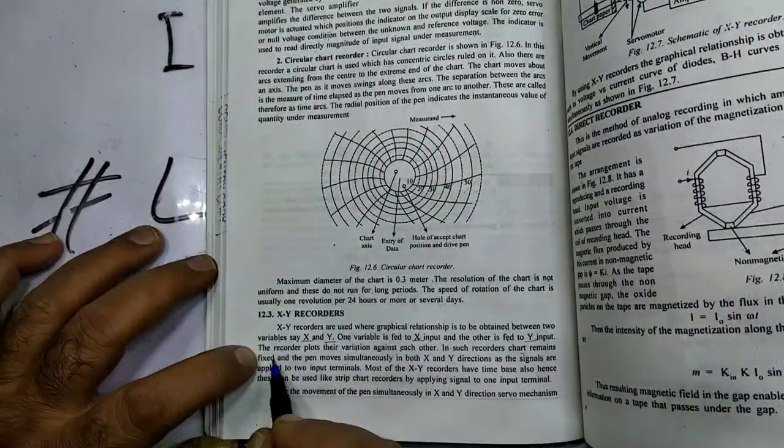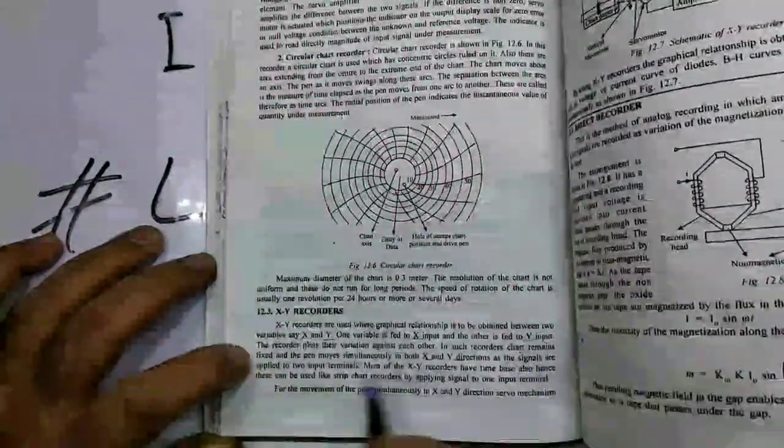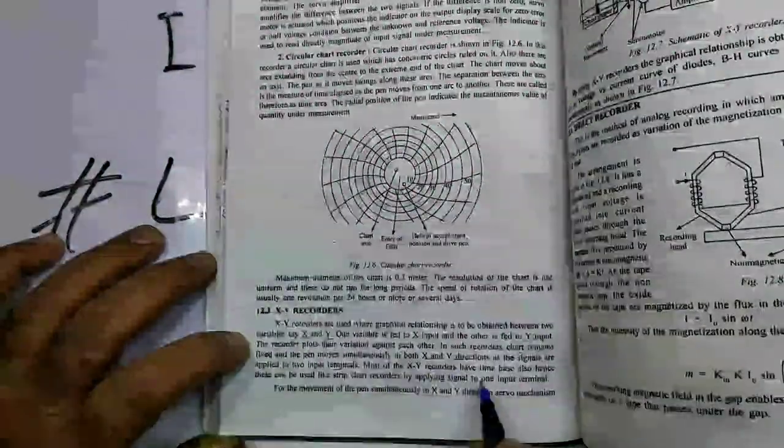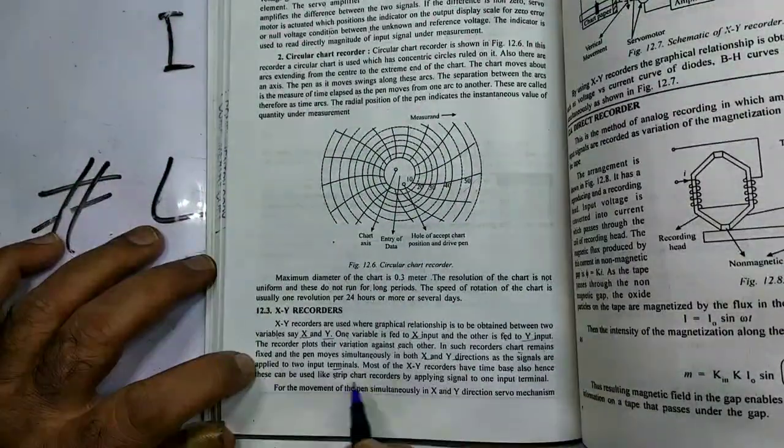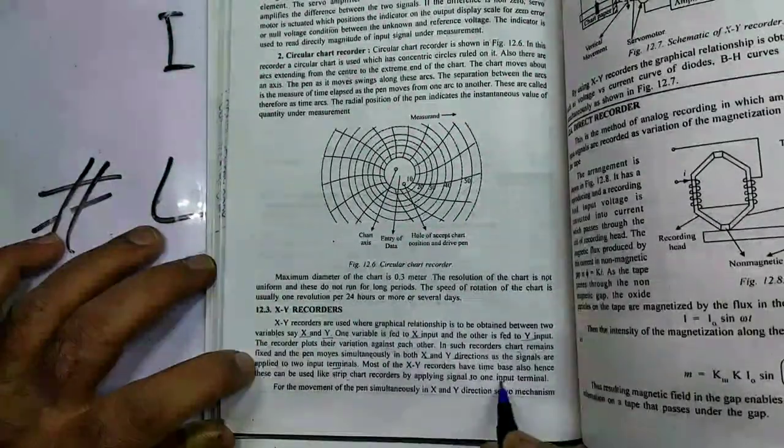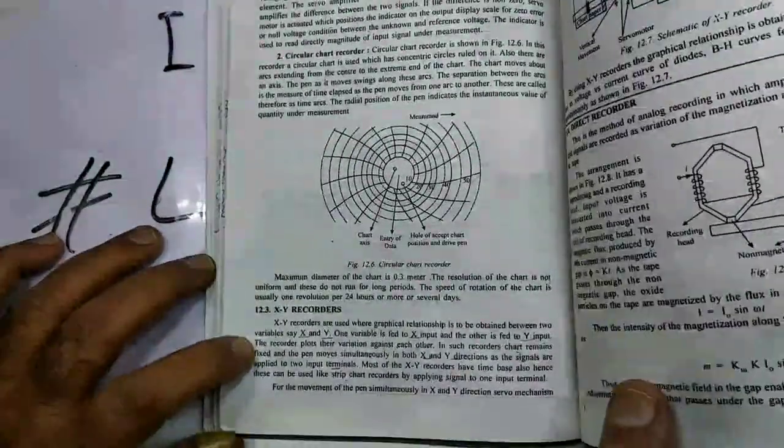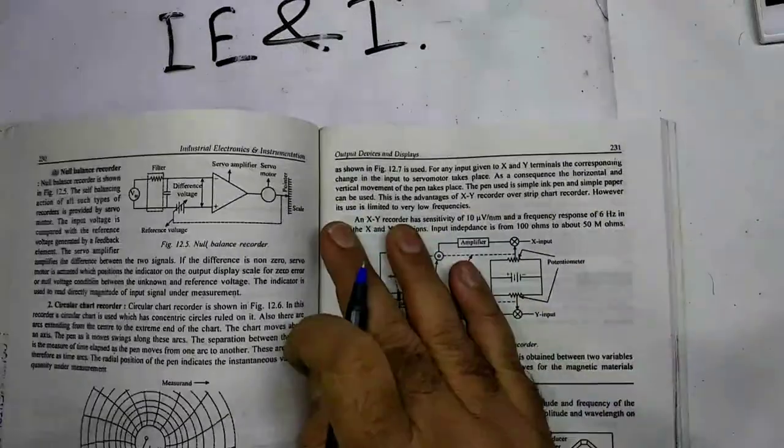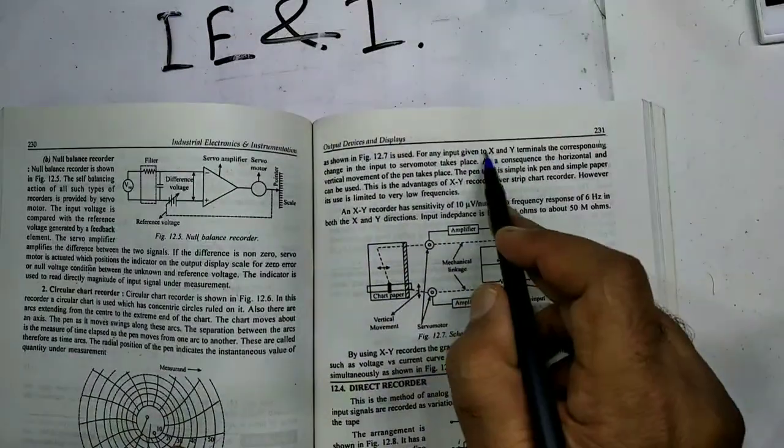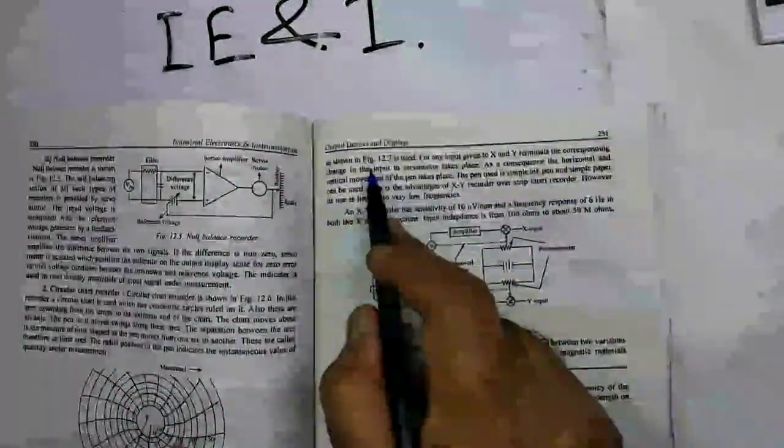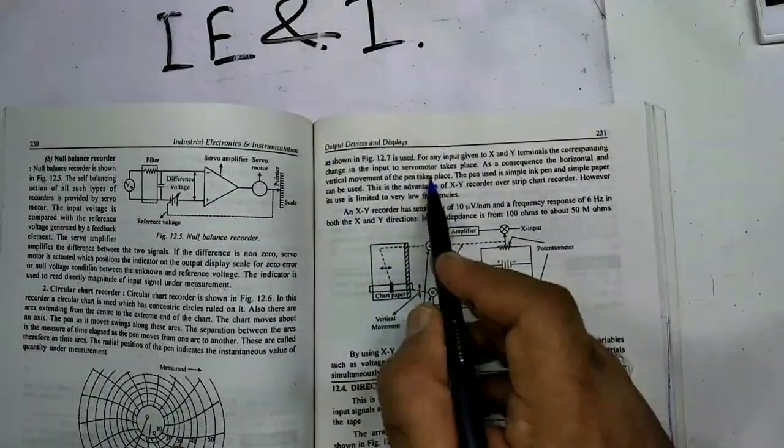Most of the X and Y recorders have time base also and hence they can be used like strip chart recorder by applying signals to one input terminal. For movement of the pen simultaneously in X and Y direction, servo mechanism is used as shown in the figure. For any input given to X and Y terminal, the corresponding change in the input to servo motor takes place.